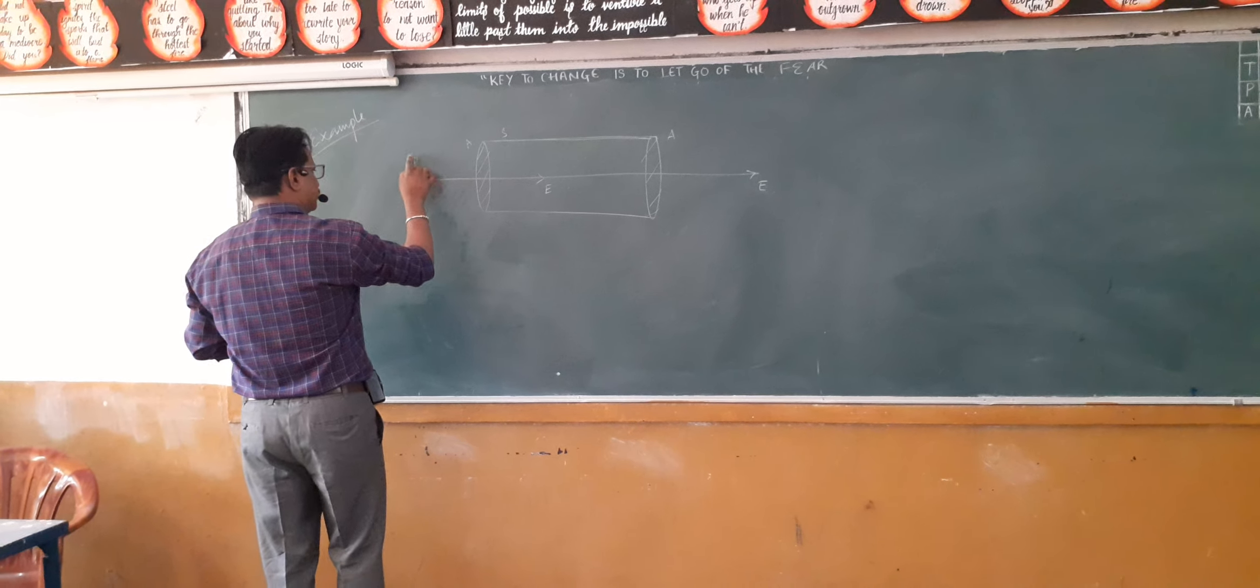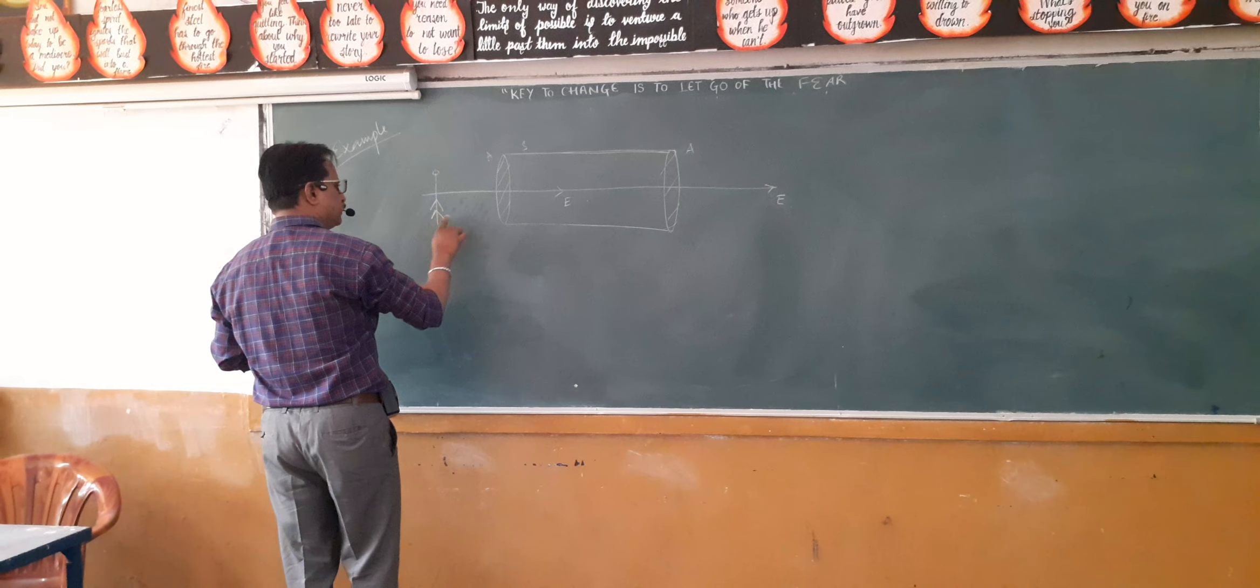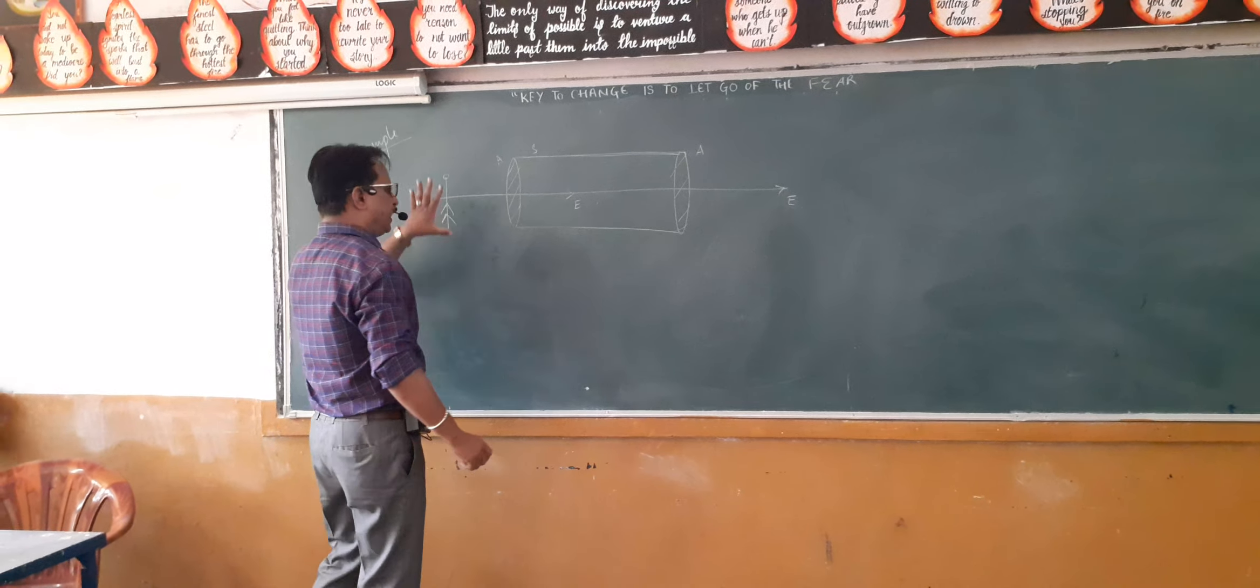Now, I want to see how much flux is entering. When flux is entering, where should I stand? I should stand here, and I want to count the number of field lines going into the surface. So when I am here, the normal should be towards me. He is the observer now.